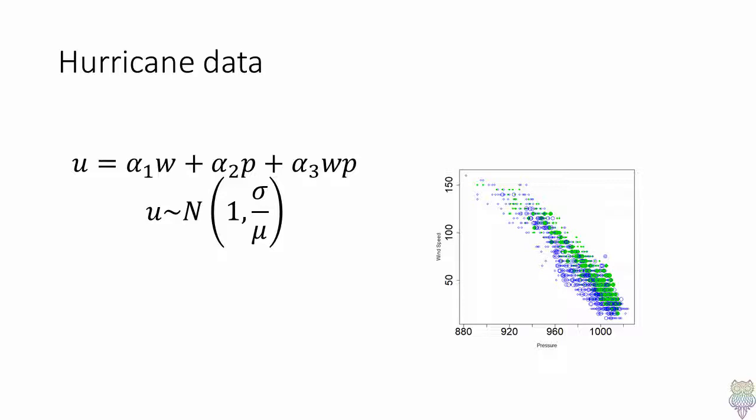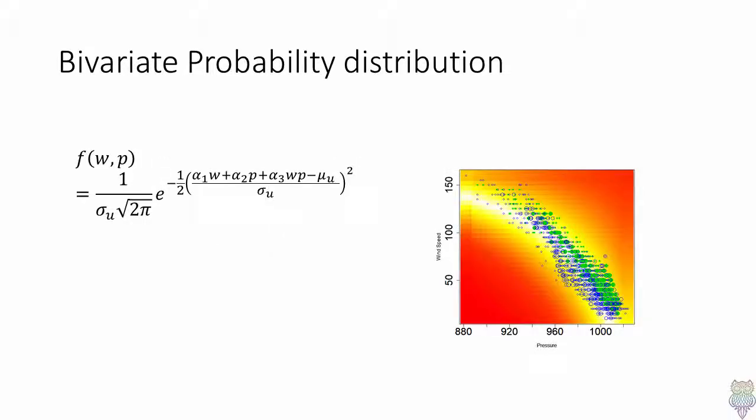Consider hurricane data that we discussed in our last video. If we know that the relationship between wind speed and pressure has an interactive component, we can set it equal to unity, the unmeasured variable, fitting the model using the expected value of unity. In addition to describing the relationship between wind speed and pressure with an interactive element, we can also use this fitted model.